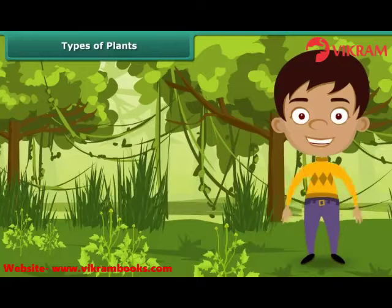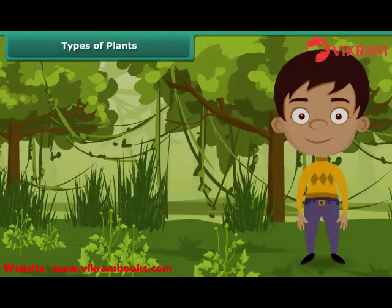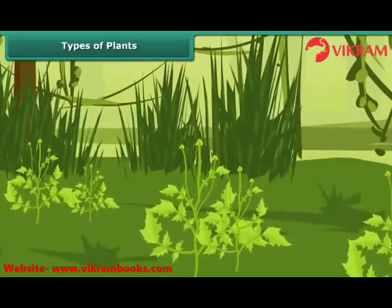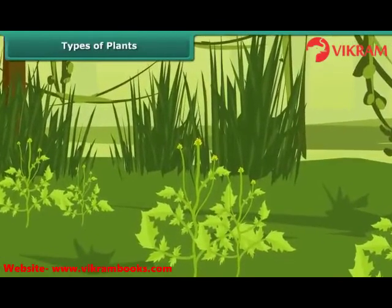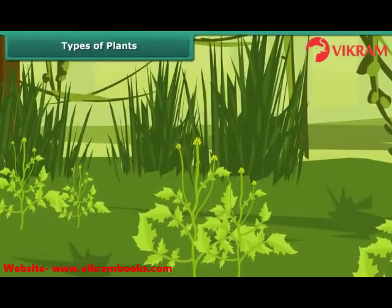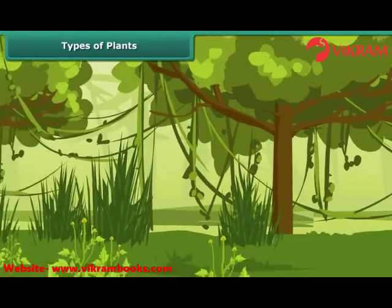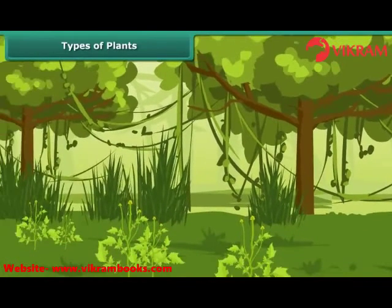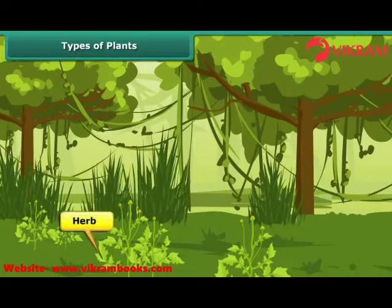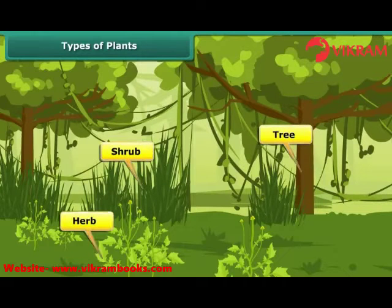We see different kinds of plants growing around us. They vary in their appearance — some are short while some others are tall, some are tender whereas some others are hard. In fact, plants can be classified into three categories as herbs, shrubs, or trees based on their characteristics.